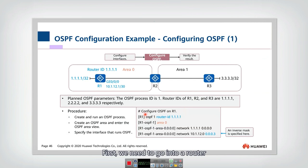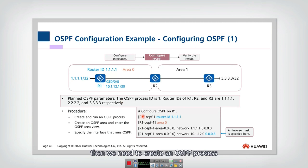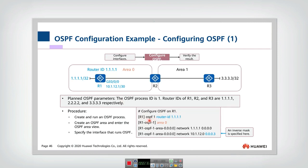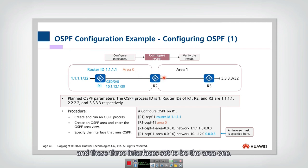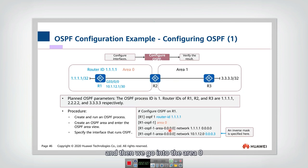Now let's configure OSPF — this requires careful attention. First, we go into the router device view, for example R1, and create an OSPF process using the command 'ospf 1', adding the router ID behind it. We then set different areas: three interfaces are placed in area 0 and three interfaces in area 1.